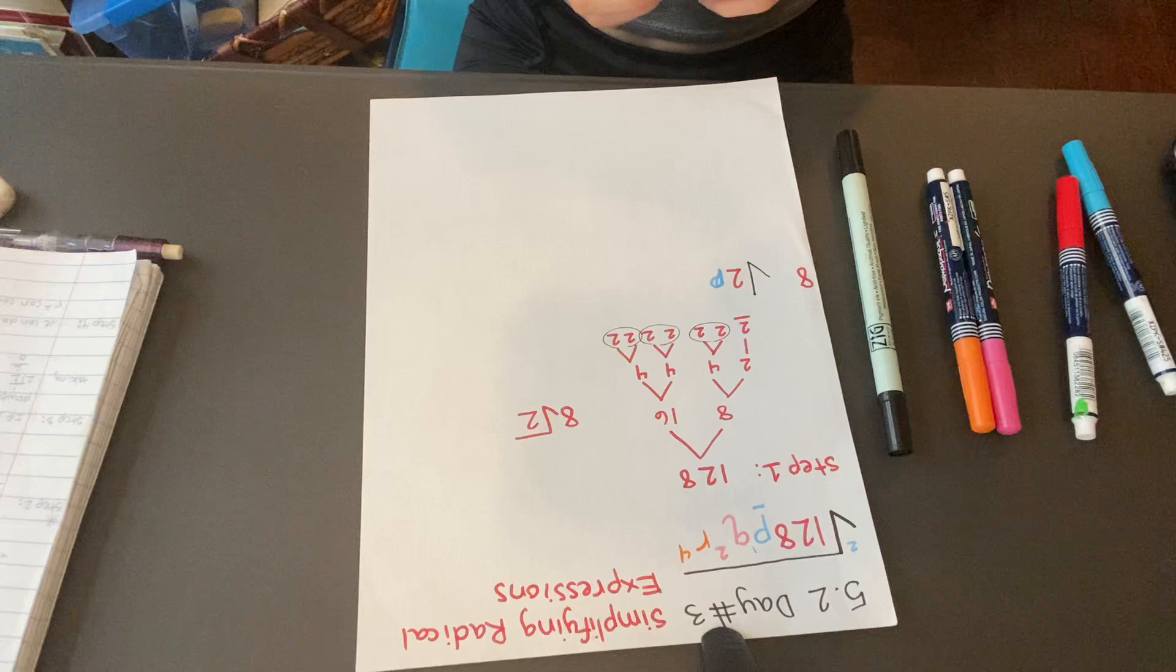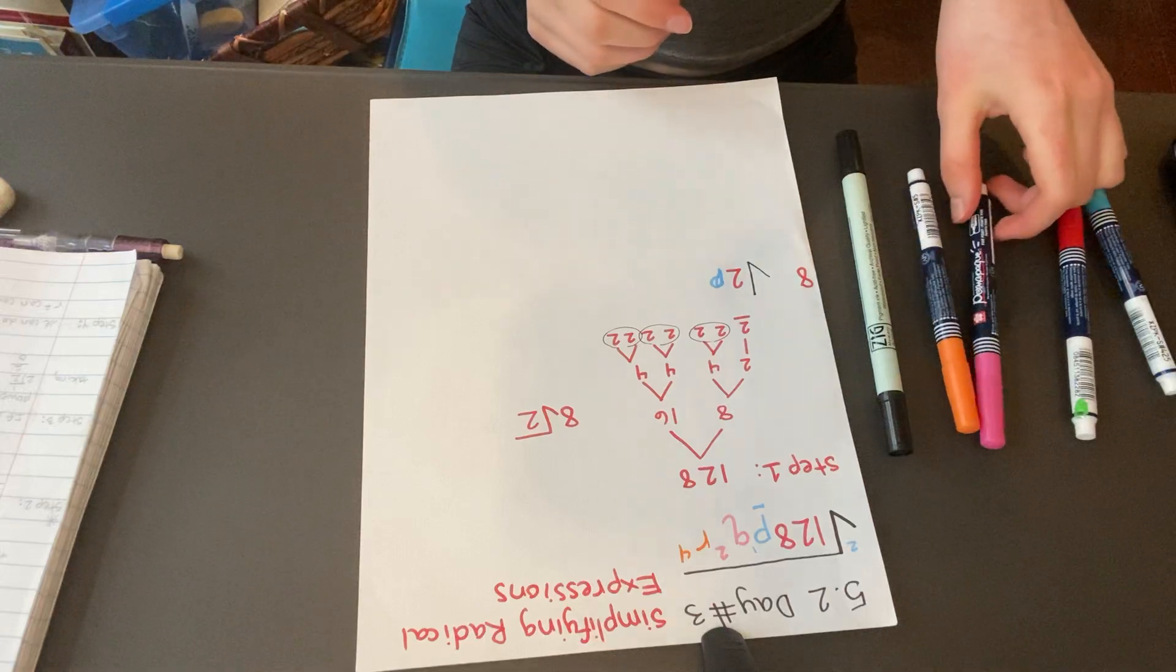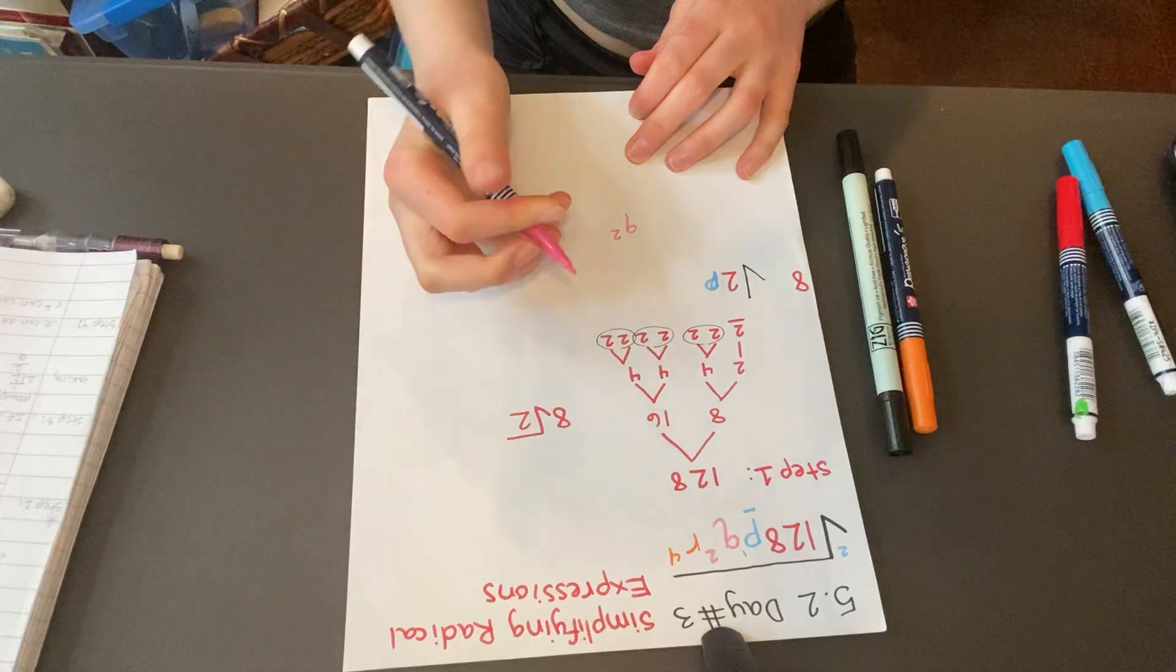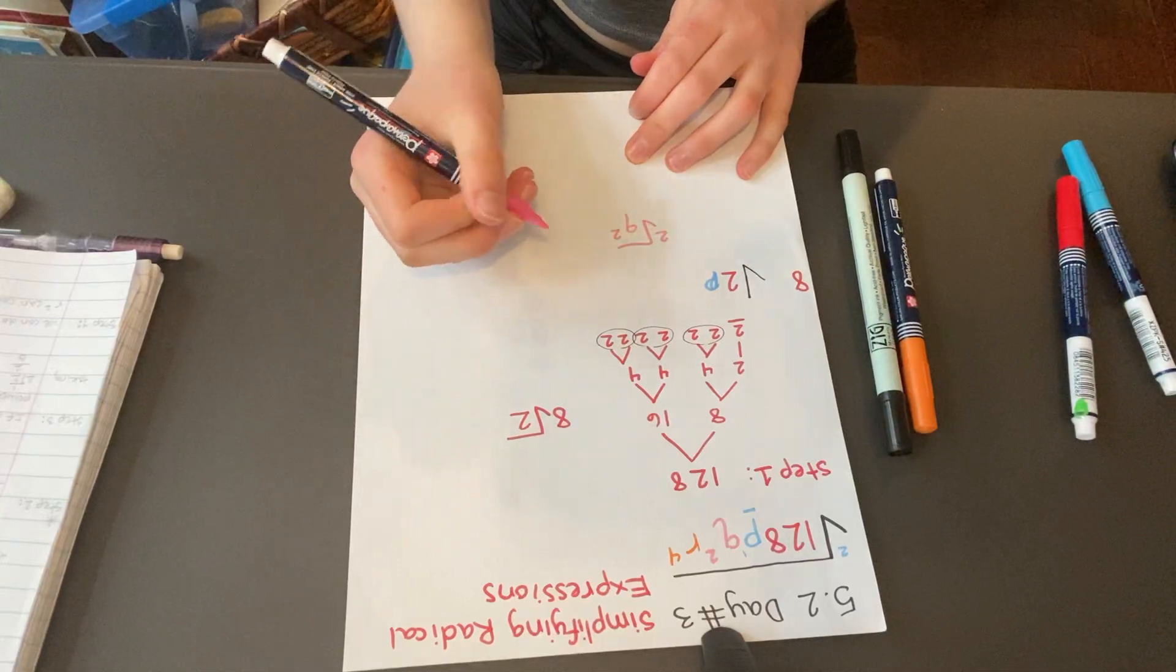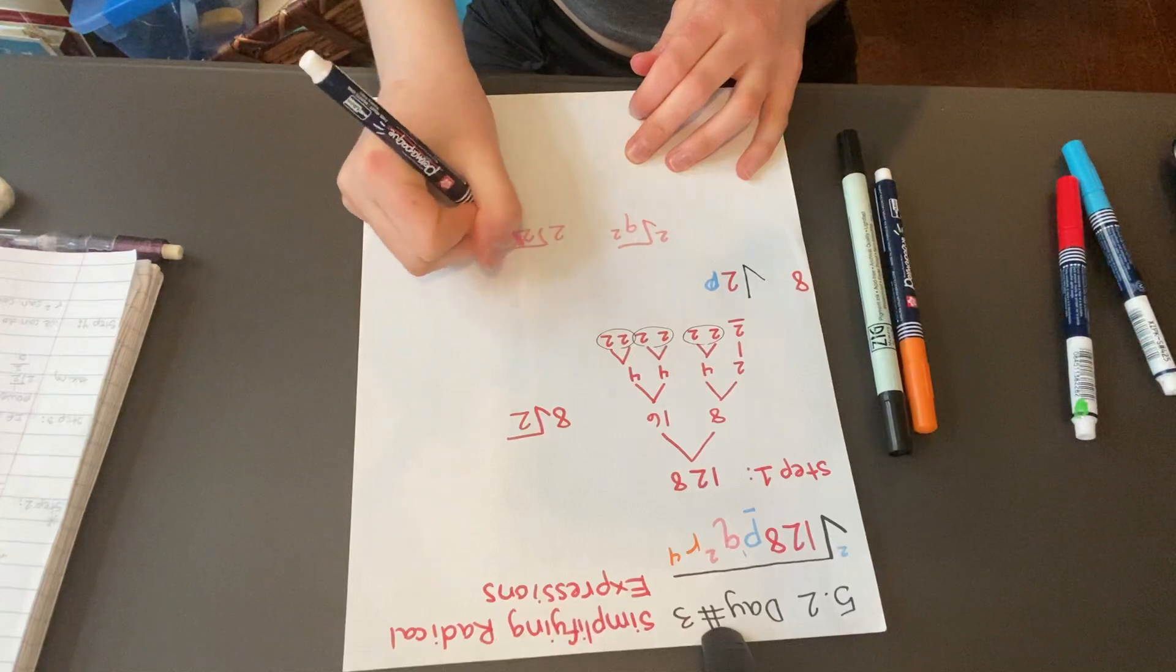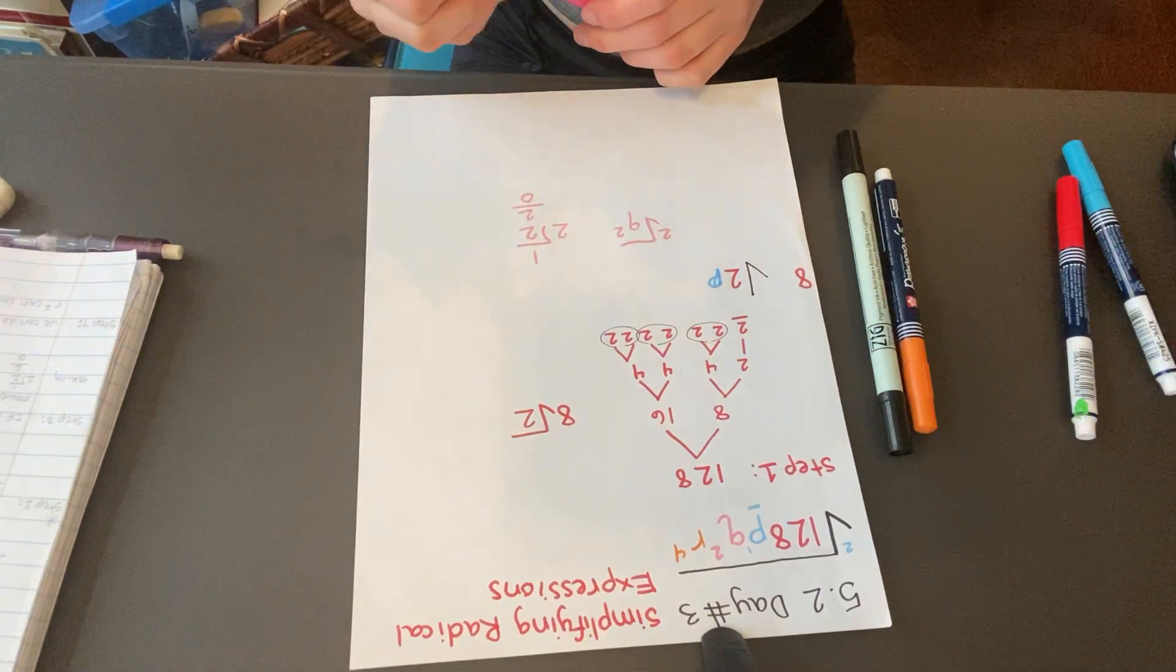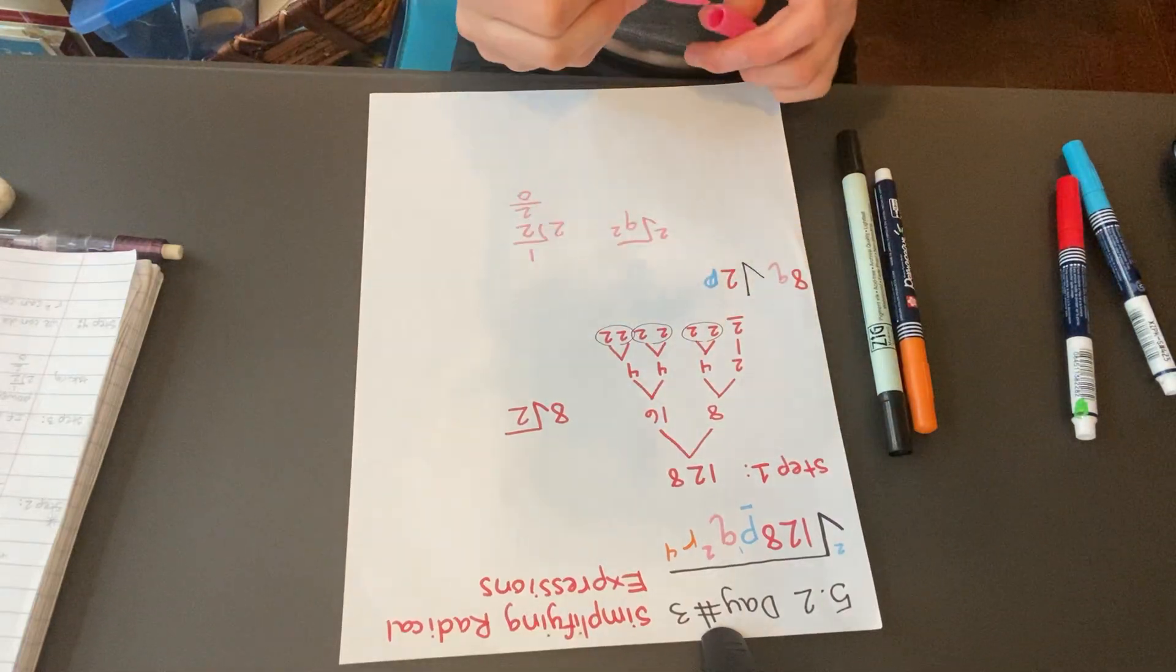The next step is we're going to deal with the Q squared. We can think of Q squared, and then we're taking the square root of Q squared. We're going to divide 2 into 2, and 2 goes into 2 one time with 0 remainder. So we can bring out a Q in front of the radical.